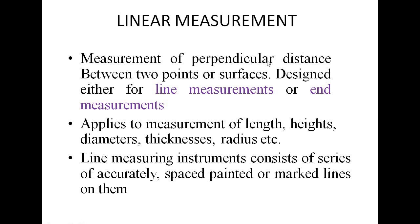What is meant by measurement? Measurement is the process in which we determine an unknown quantity. The unknown quantity includes dimensions like length, width, thickness, radius, etc. Measurement generally has two types: line measurement and end measurement.